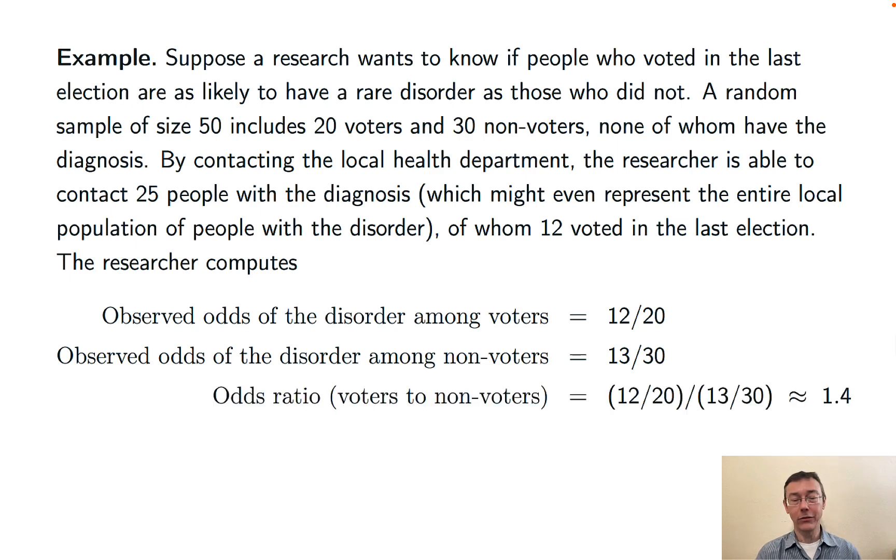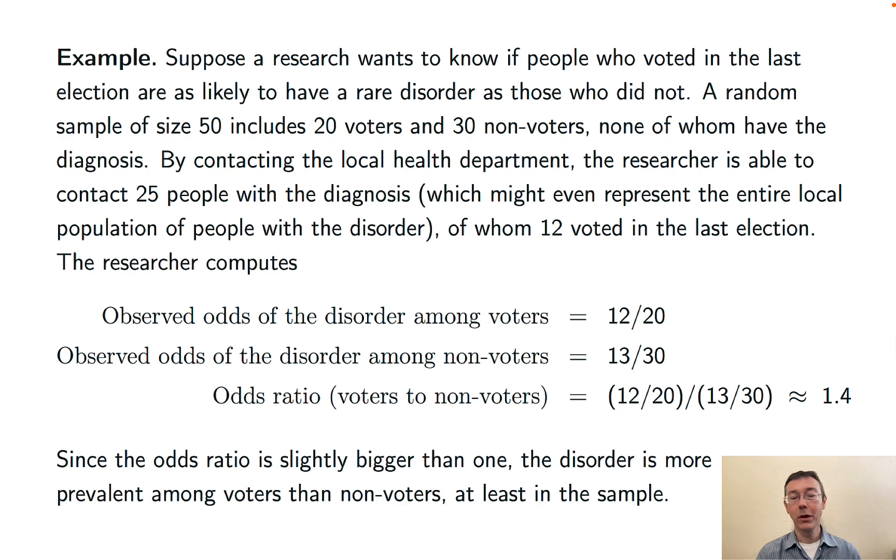Now we can compute the odds ratio for voters to non-voters, people with the condition, by dividing those two numbers, and we get 1.4. That number is a little bit bigger than 1. We interpret that to mean that the disorder is somewhat more prevalent among voters than non-voters, at least in this sample.